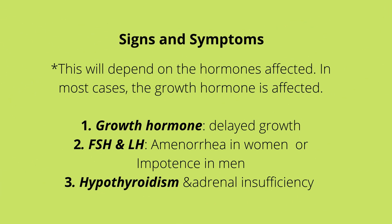Signs and symptoms depend on the hormones that are being affected. In most cases the growth hormone is affected, and with a patient with hypopituitarism you will note that they have delayed growth. The FSH and LH could be affected, which can result in impotence in both females and males, and the patient could have effects of hypothyroidism as well as signs and symptoms of adrenal insufficiency, which could be because of the pituitary gland not producing enough ACTH.